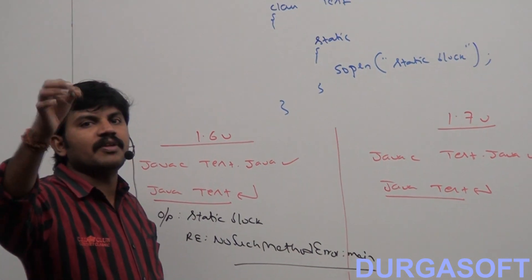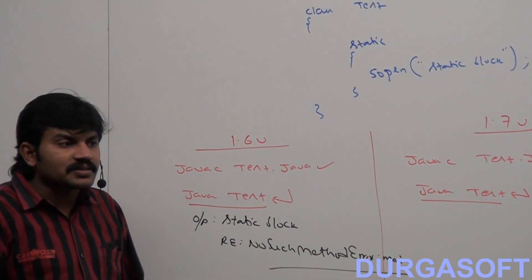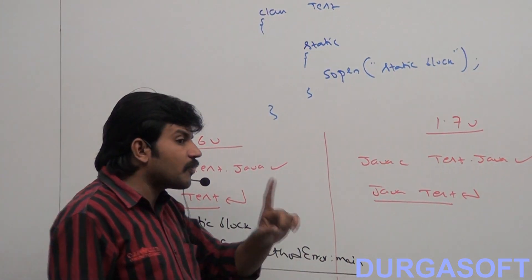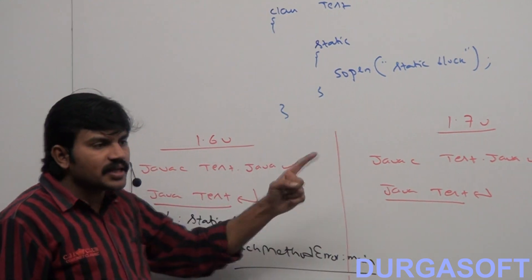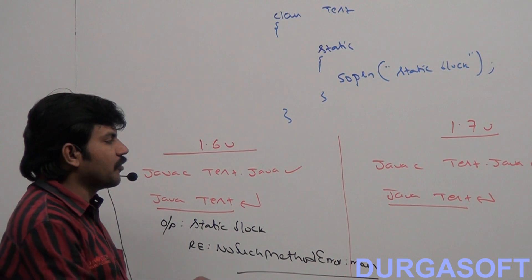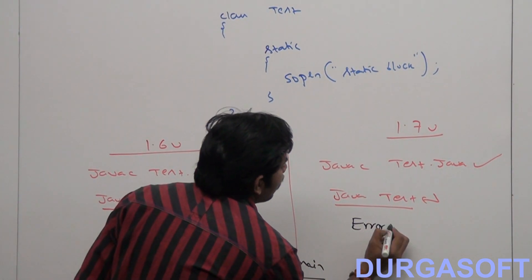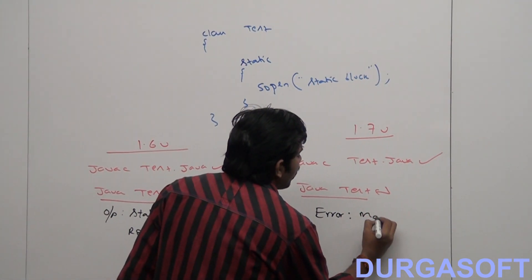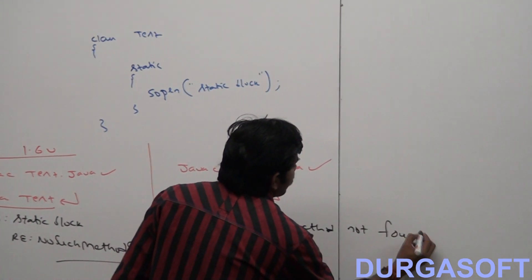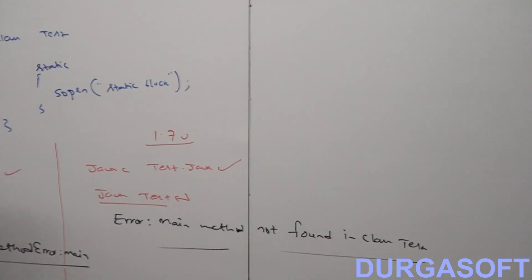From 1.7 version onwards, to run a Java program, the main method is mandatory. This rule is applicable from 1.7 version onwards. If the class doesn't contain a main method — even though you wrote a static block — there is no use; it won't be executed. Immediately we are going to get error information saying: 'Main method not found in class Test.' Static block won't be executed.